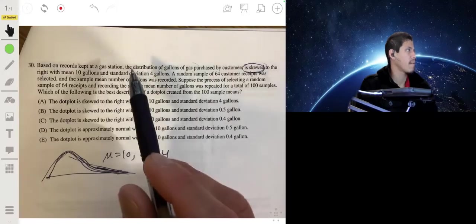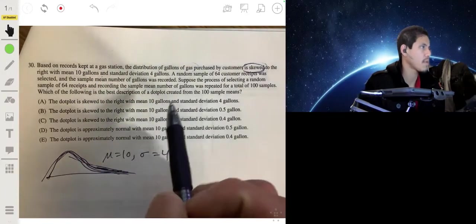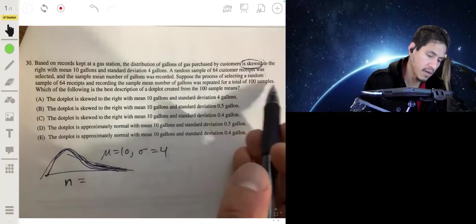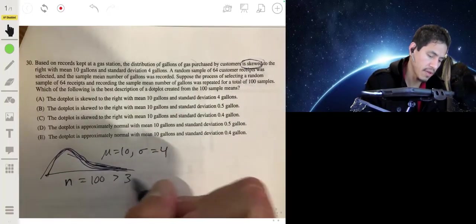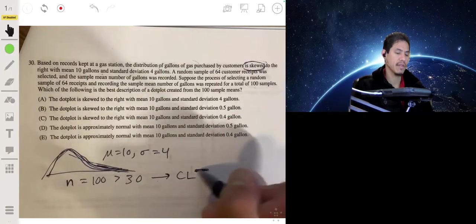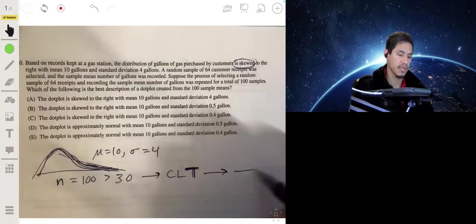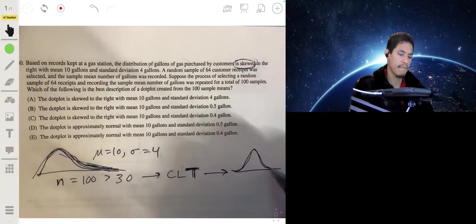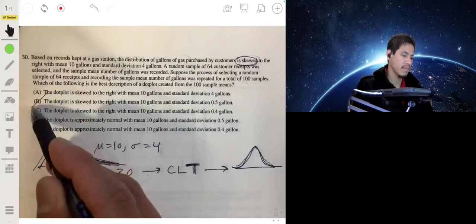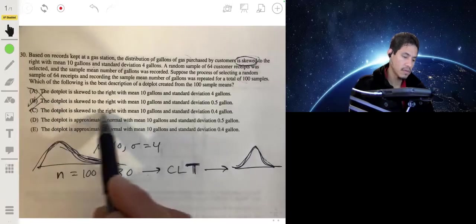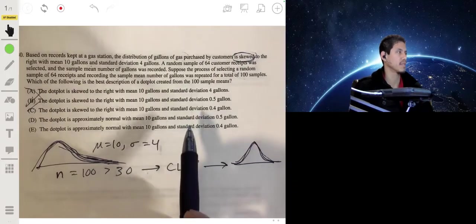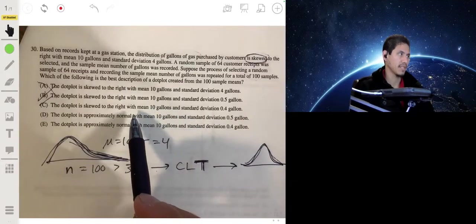But since we're talking about means and calculating sample means, we're taking at least 30 samples, we're taking 100 samples which is greater than 30. By the central limit theorem, the CLT theorem tells you that the distribution is going to eventually, or is going to approach normal, it's going to be a normal distribution. So it's not going to be skewed to the right, so we know it's not going to be A or B or C. It's going to be either D or E. Remember, this is the central limit theorem, it's a big deal in stats, so make sure you look it over. Let's look at what's going on with D or E. We just have to now figure out what the mean and standard deviation values would be.